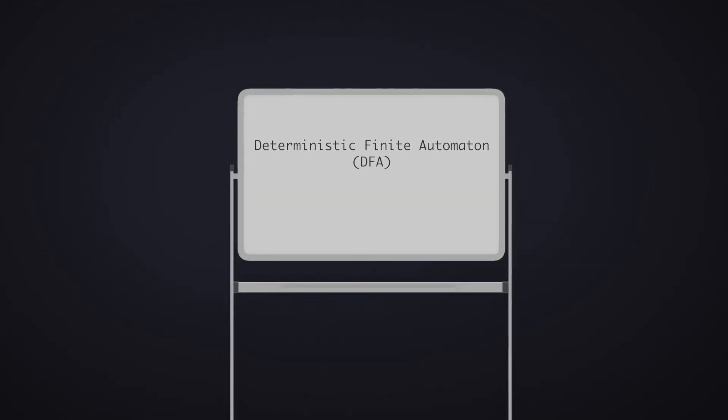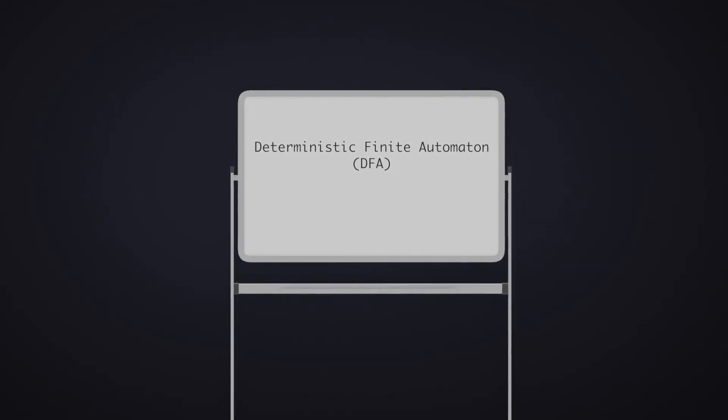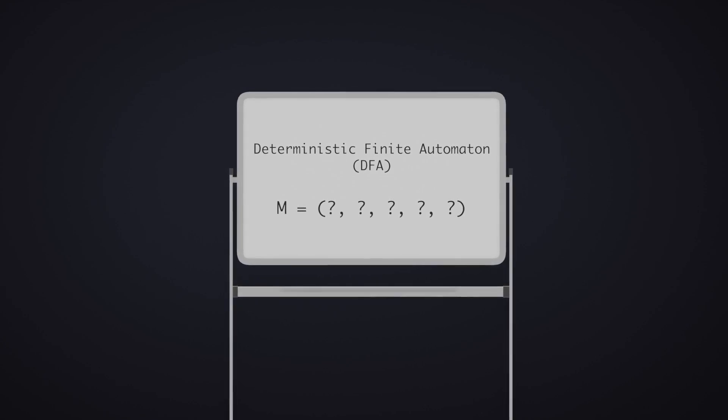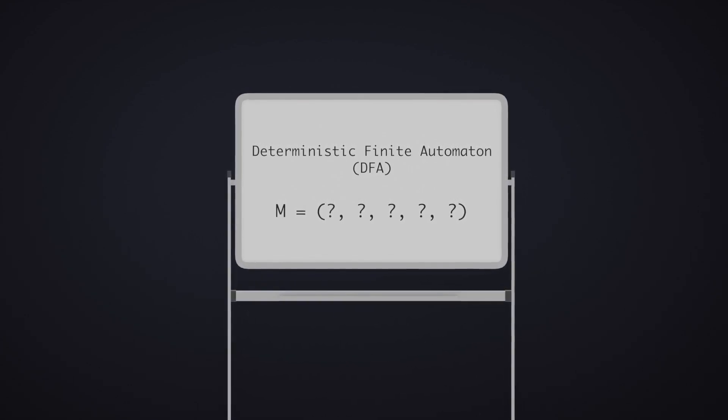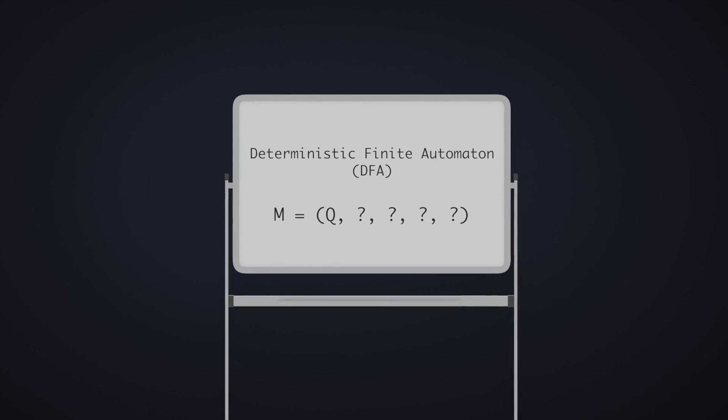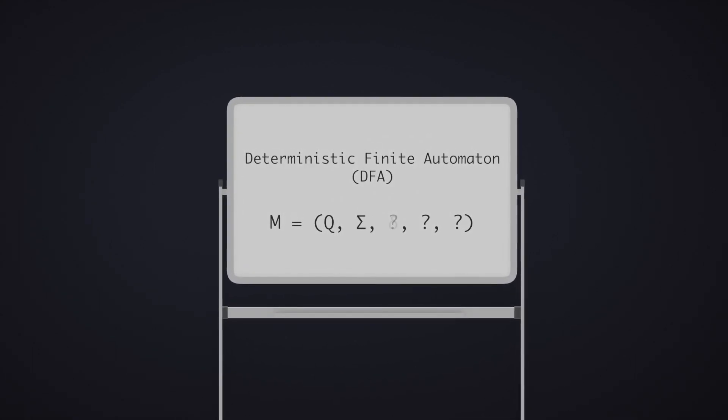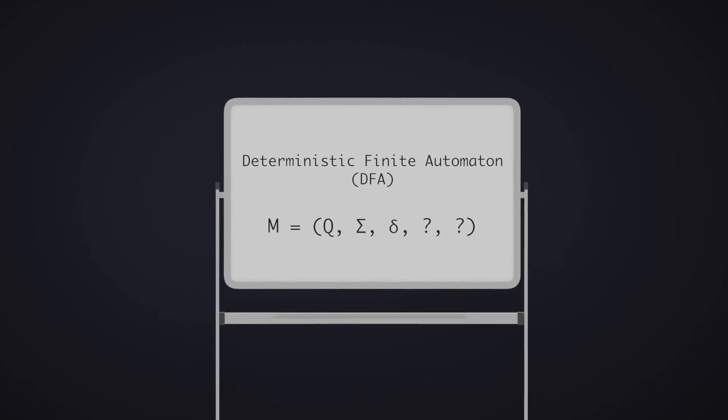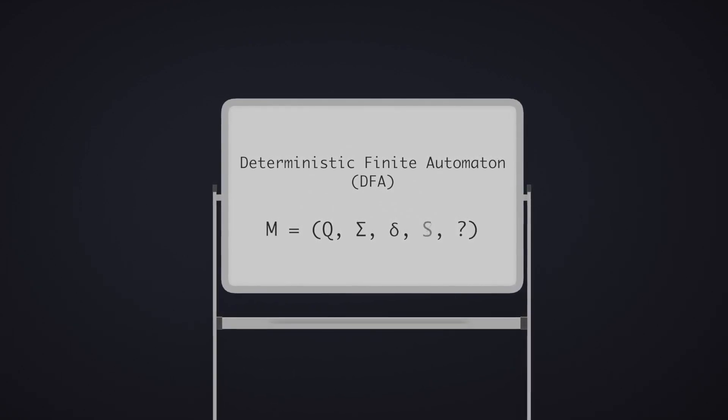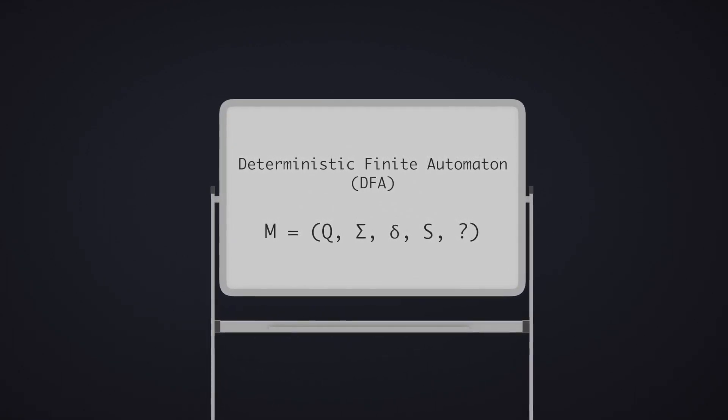A DFA is formally defined as a mathematical object consisting of 5 things: A set of states Q, an alphabet of input symbols sigma, a state transition function delta, a special start state S, and a set of accepting states F.